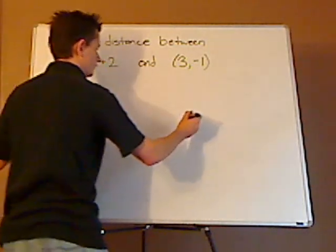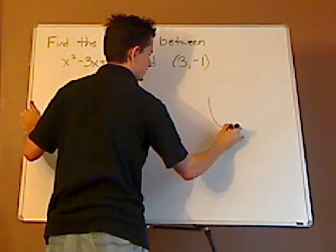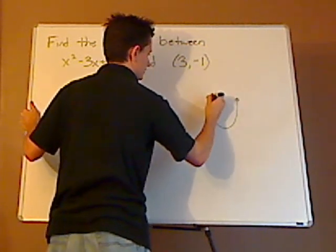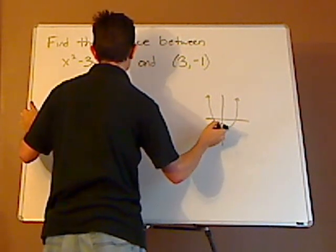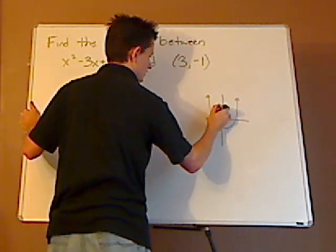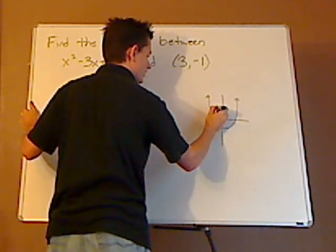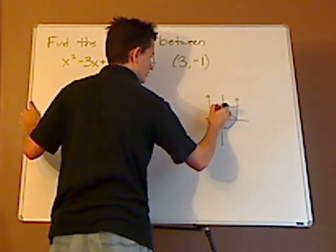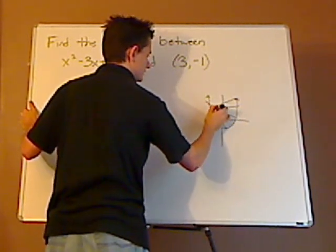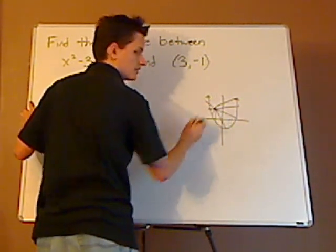Because if you have a curve, for example, this one's going to be facing up. I don't know how it's exactly going to be placed, but it's going to be facing up and you have the point right here. Well, you have a variety of different points. The distance, by definition, is the shortest distance between the point and the curve.